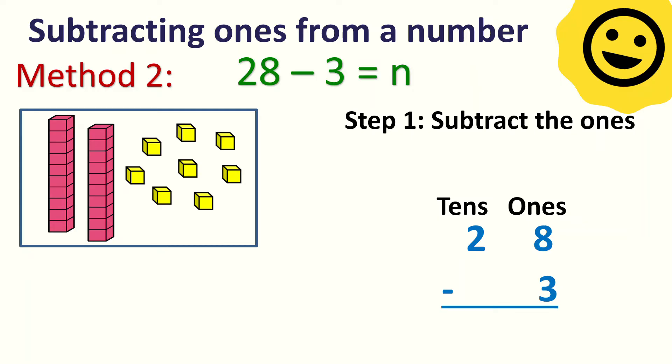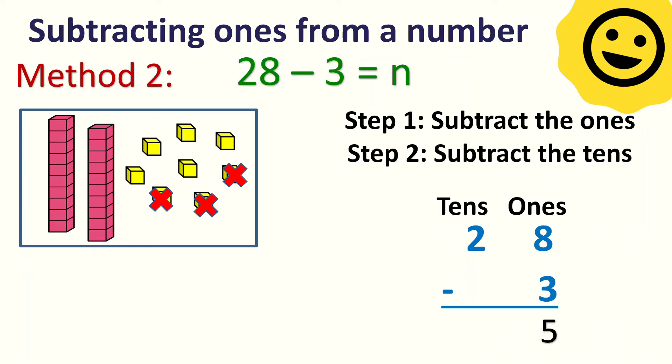8 minus 3 — let's take away 3 from 8: 1, 2, 3. How many are left? 5. Very good! Now, the second step is to subtract the tens. 2 minus nothing — it's still 2.